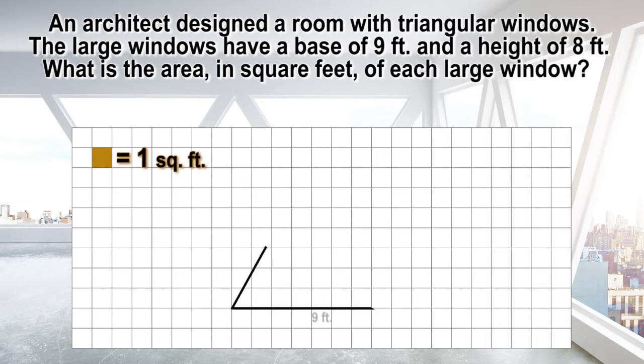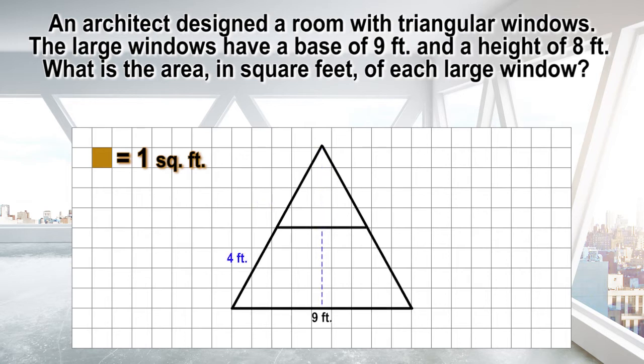The base is 9 feet and the height is 8 feet. One way to calculate the area of the triangle would be to decompose the triangle into a trapezoid and one triangle, then recompose it into a parallelogram. Start by dividing the triangle into a trapezoid with a height of 4 feet and a triangle with a height of 4 feet.